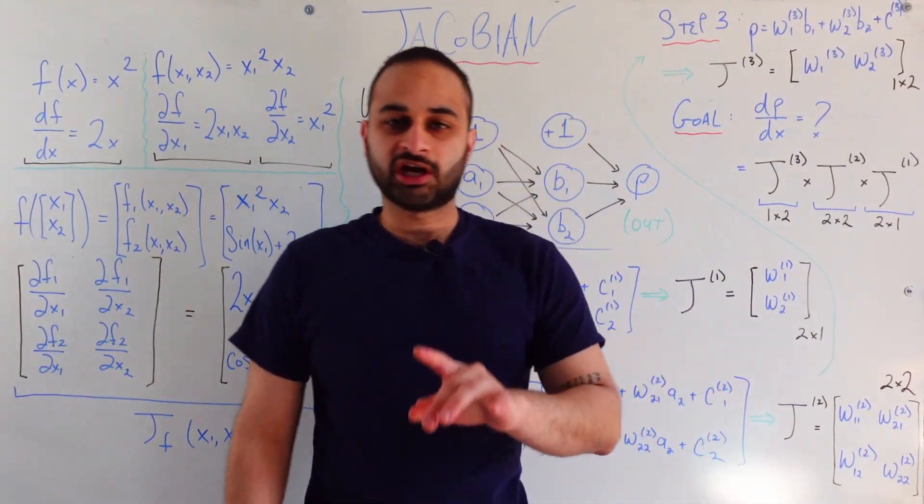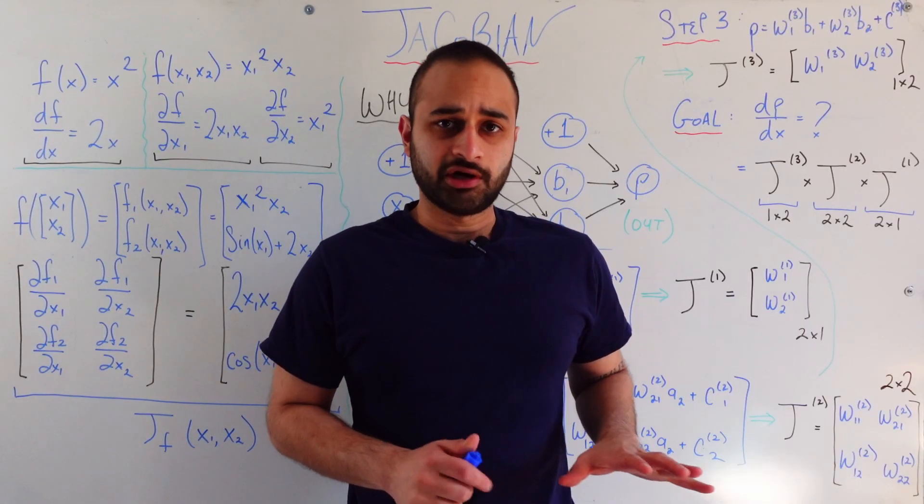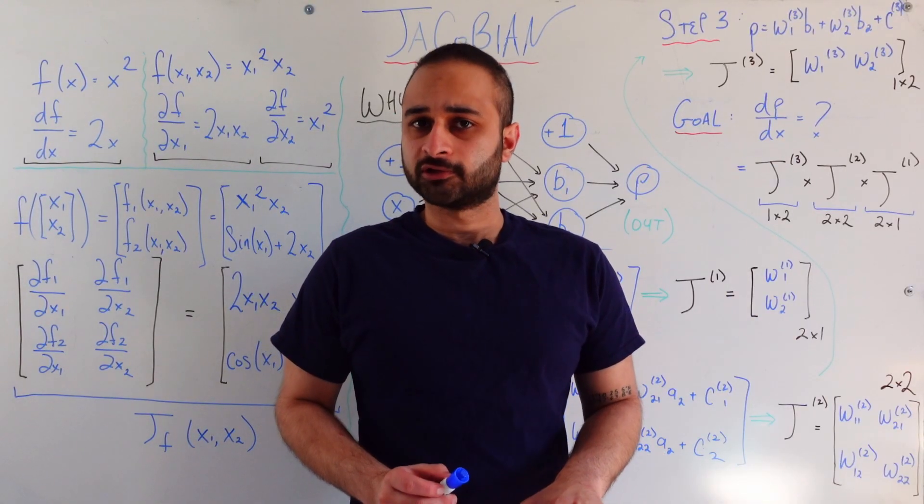Hey everyone, welcome back. So today we're going to be talking about a cool mathematical object called the Jacobian. So it has one of those scary sounding names, but I promise it's not too difficult.